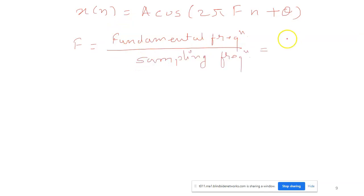A digital signal can be represented as xN equals A cos 2 pi fn plus theta. Here, f is the fundamental frequency divided by the sampling frequency.